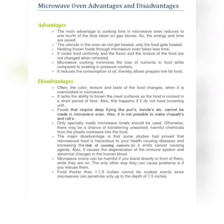Disadvantages: Often the color, texture, and taste of the food changes when it is cooked in a microwave oven. It also lacks the ability to brown meat surfaces, as food is cooked in a short period of time. This happens if you do not have a browning unit.